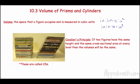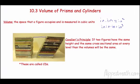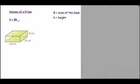Here's an important principle — Cavalieri's Principle: if two figures have the same height and the same cross-sectional area at every level, then the volumes will be the same. So it doesn't matter if it's a right prism or an oblique prism. If the heights are the same and the cross sections are the same, it gives us the exact same volume.